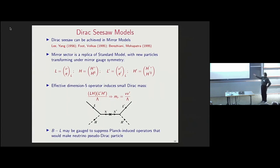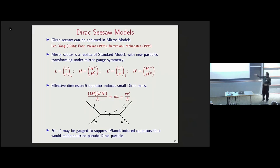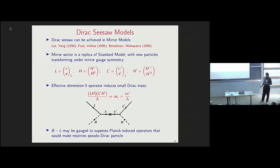In this context, one cannot write a direct mass term because L and L′ transform under different gauge symmetries. However, one can obtain an operator very much like the Weinberg operator but applied to Dirac neutrinos. The neutrino mass is given by the electroweak vacuum expectation value times the mirror electroweak VEV divided by some high scale. This is a somewhat elaborate model, but it was proposed on completely different grounds — to understand the origin of parity violation — and provides a nice way of understanding the smallness of neutrino masses.